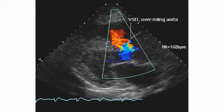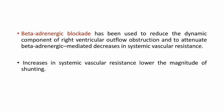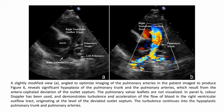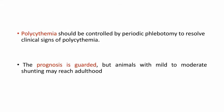Beta-adrenergic blockade has been used to reduce the dynamic component of the right ventricular outflow obstruction and to attenuate beta-adrenergic mediated decreases in systemic vascular resistance. Increase in systemic vascular resistance lowers the magnitude of shunting. This is a slightly modified view angle to optimize imaging of the pulmonary artery. The pulmonary valvular leaflets are not visualized, but it demonstrates turbulence and acceleration of blood flow in the right ventricular outflow tract.